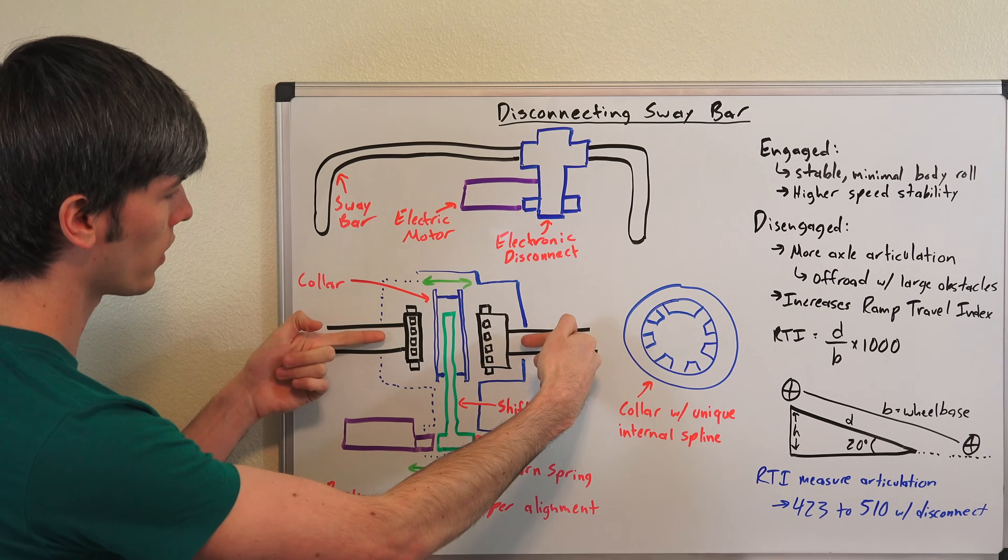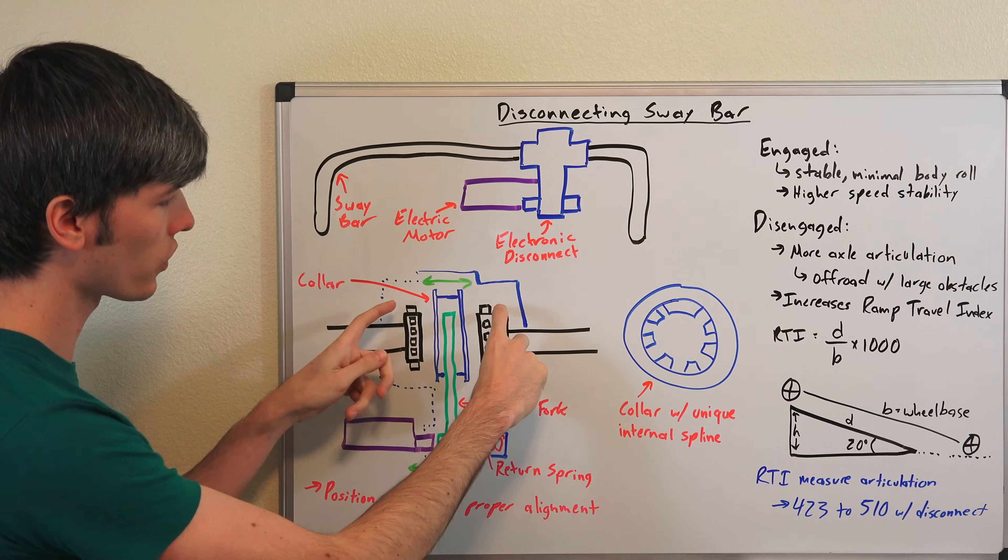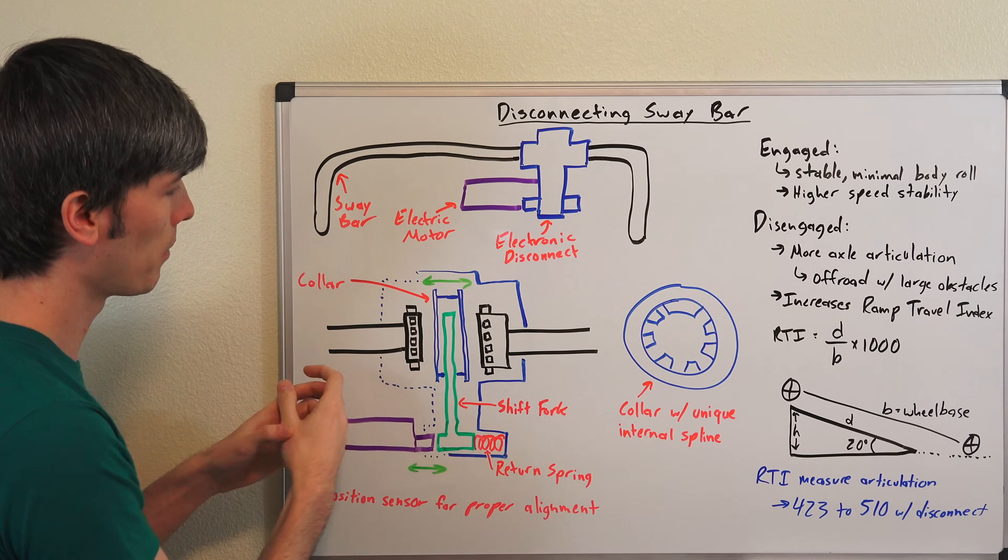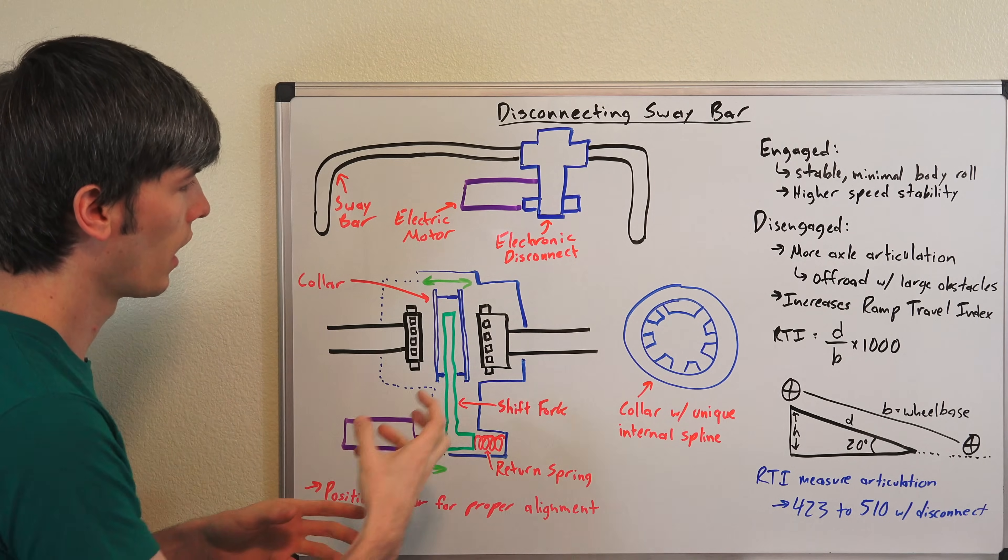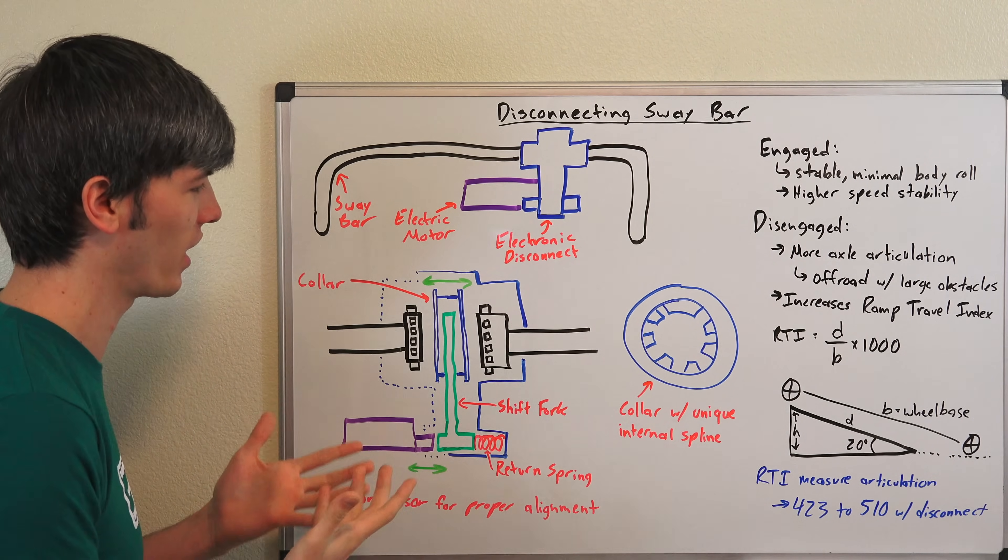We've got these two portions of the sway bar. Each of these have essentially what is a gear on the end of them, and then you have this collar in the center which has an internal spline. So this works a lot like a manual transmission actually, which is kind of cool how they relate.